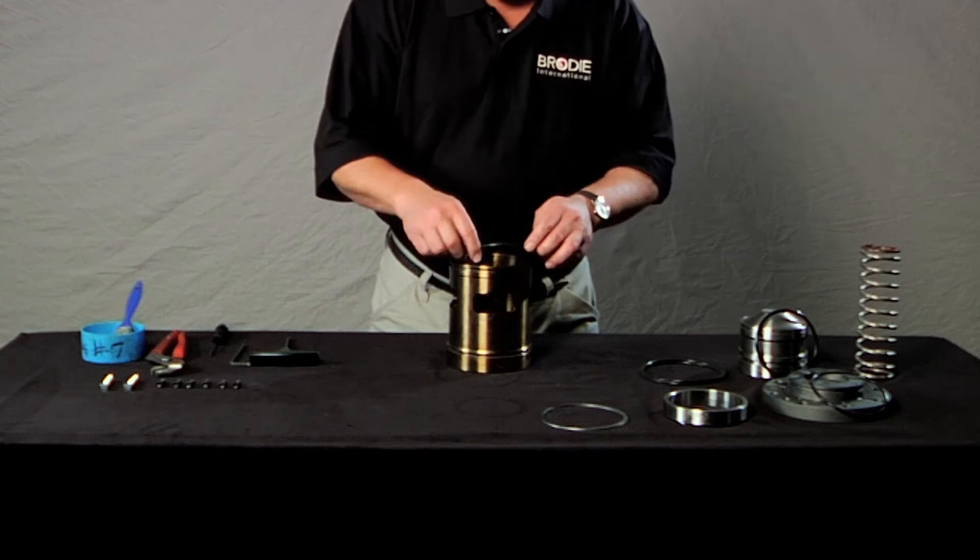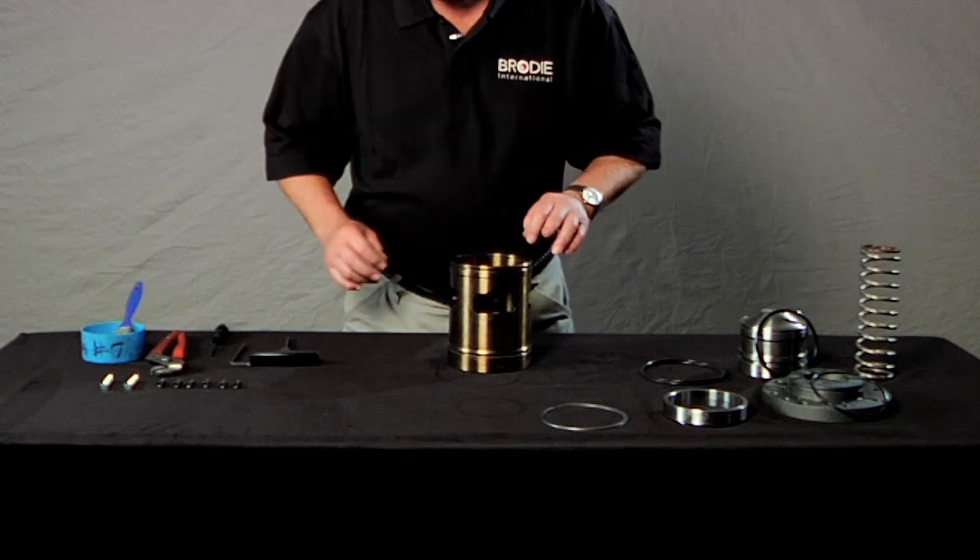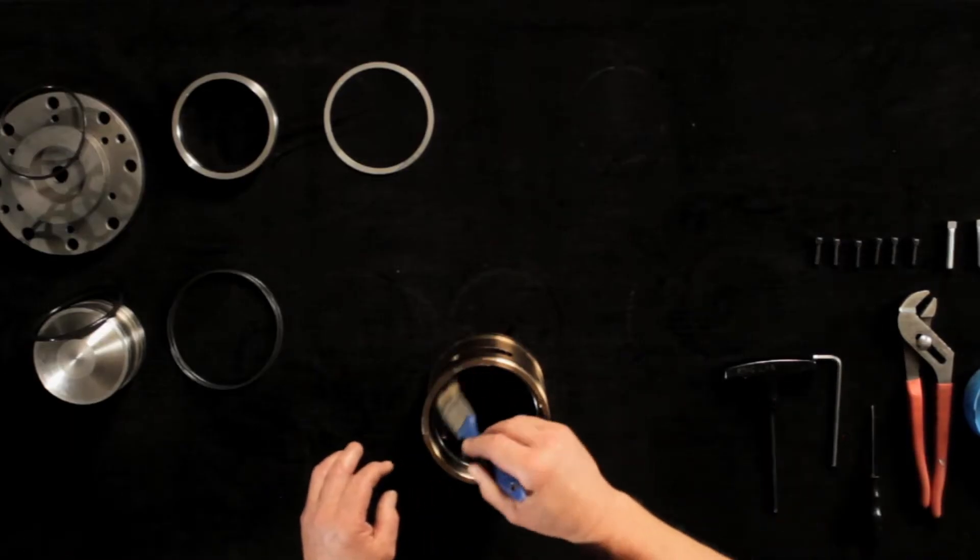Start by placing the elastomer inside the cylinder making sure that it's seated properly. Next, lubricate the elastomer.